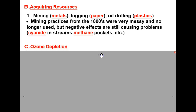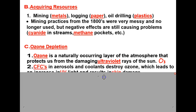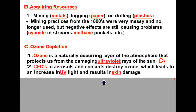Human activity also has a negative impact due to ozone depletion. Ozone is a naturally occurring layer of the atmosphere that protects us from damaging ultraviolet rays of the sun — so ozone is a good thing. The symbol for ozone is O3, while normal oxygen is O2. CFCs found in aerosols and coolants destroy ozone, which leads to an increase in UV light and results in skin damage. This is why there is such a huge emphasis on properly recycling and disposing of things like air conditioners.